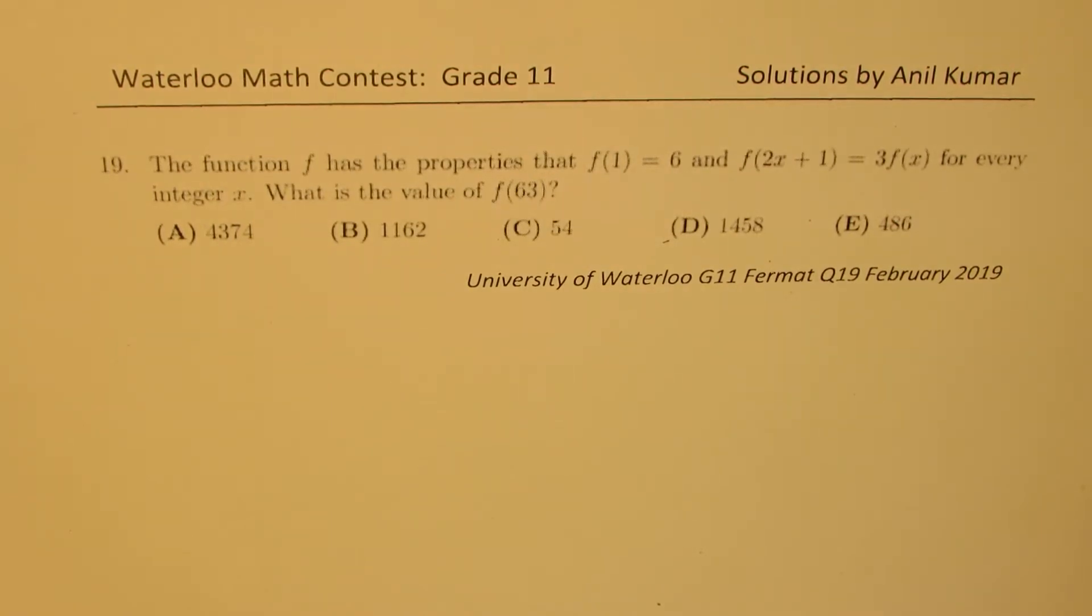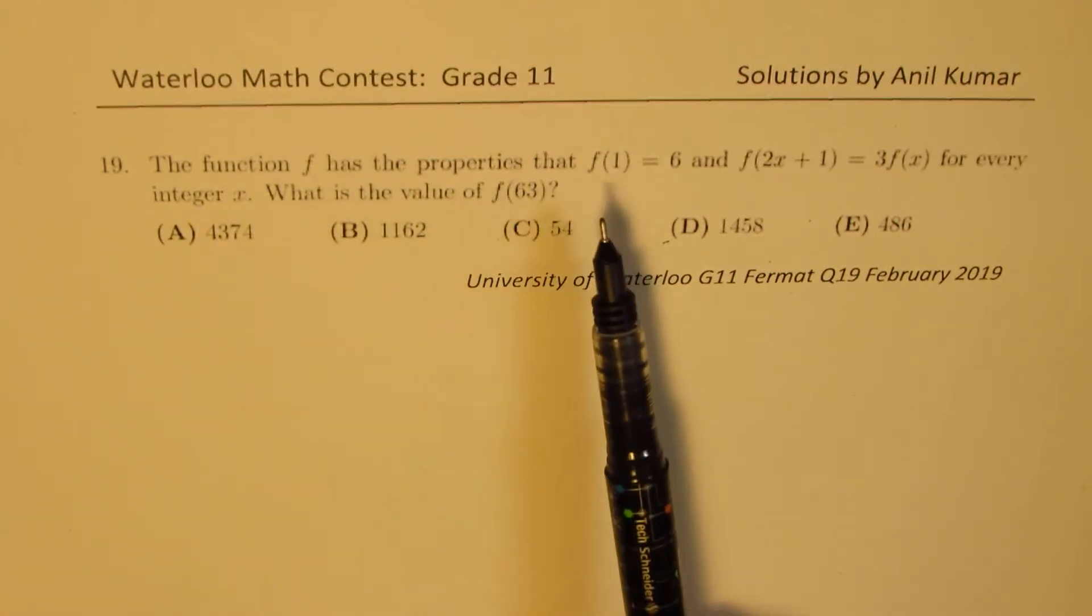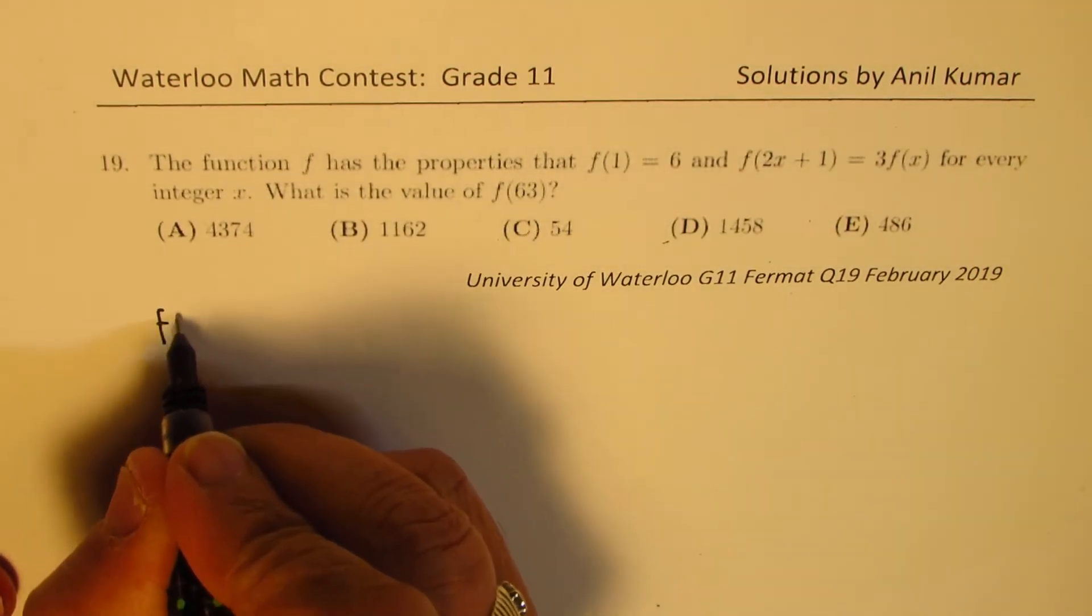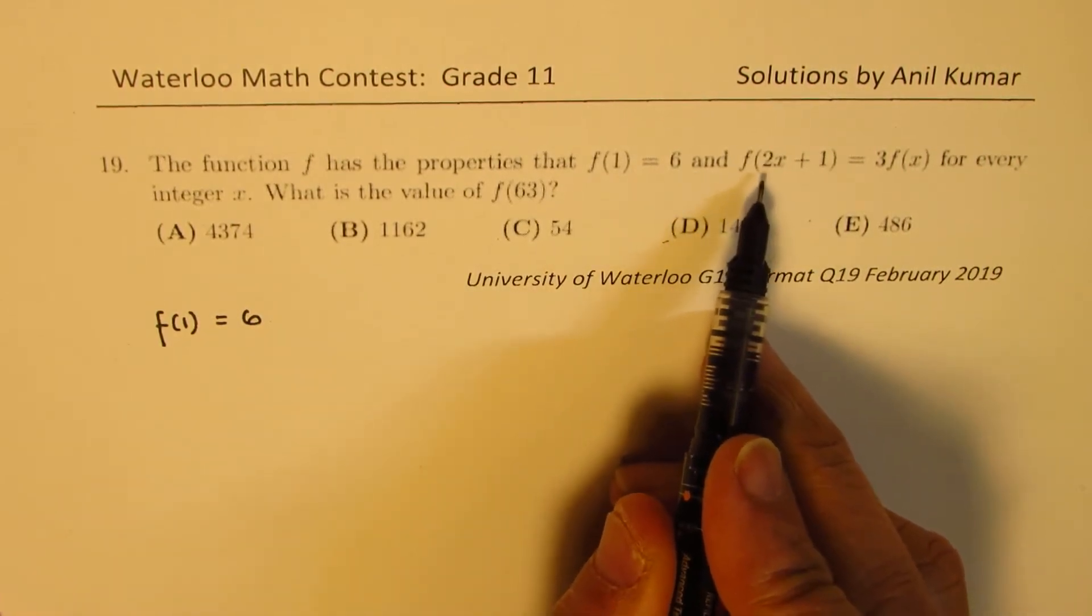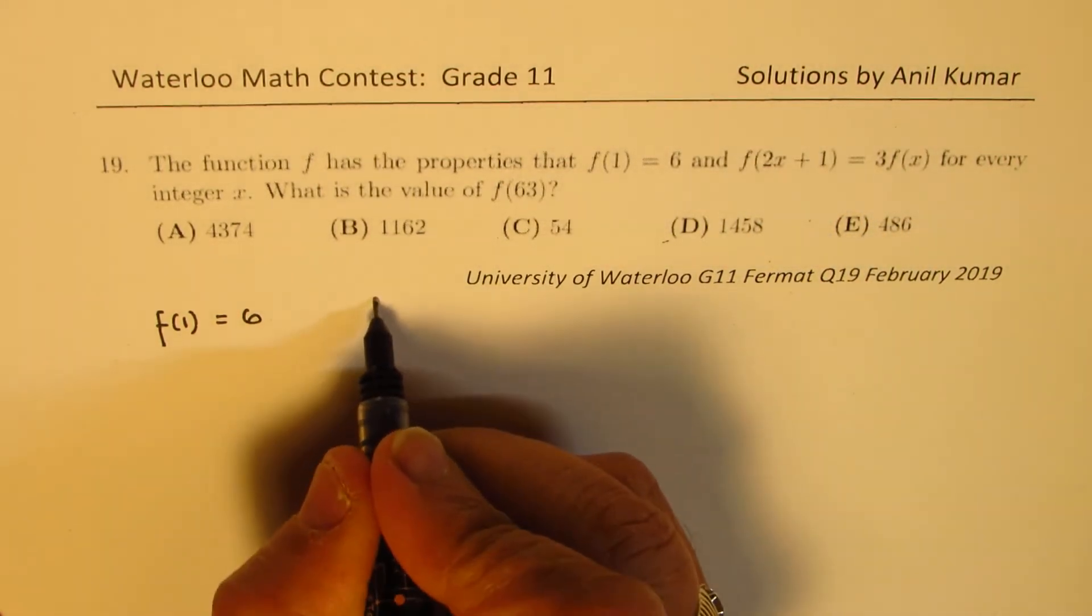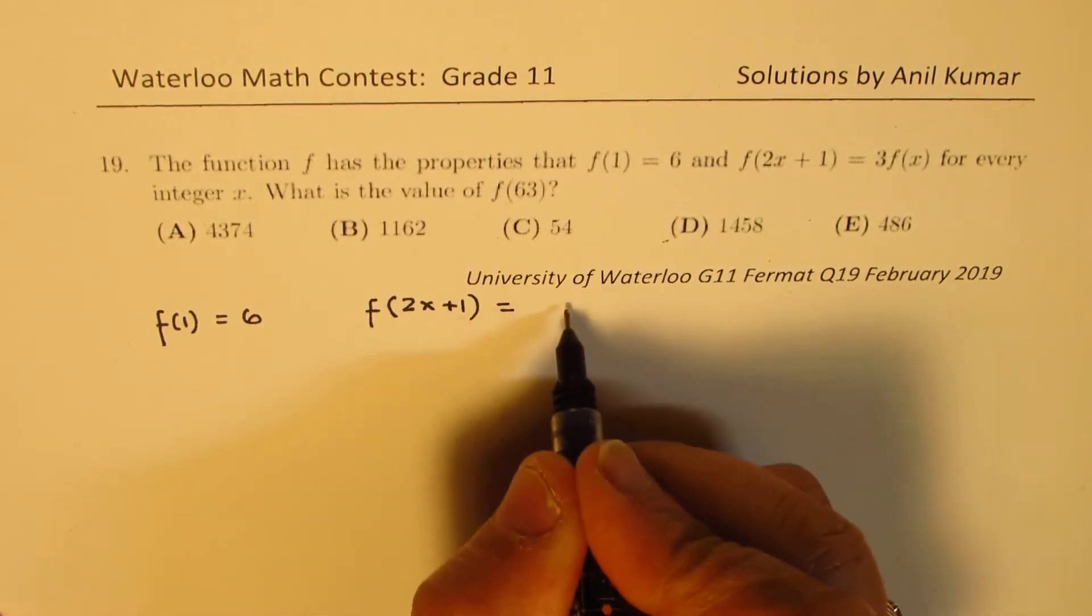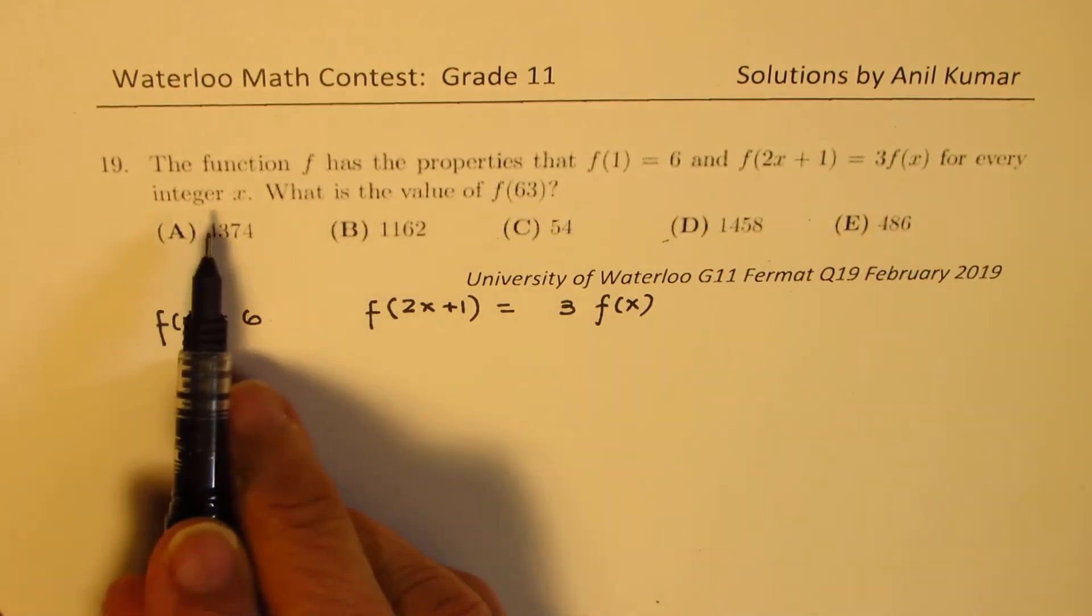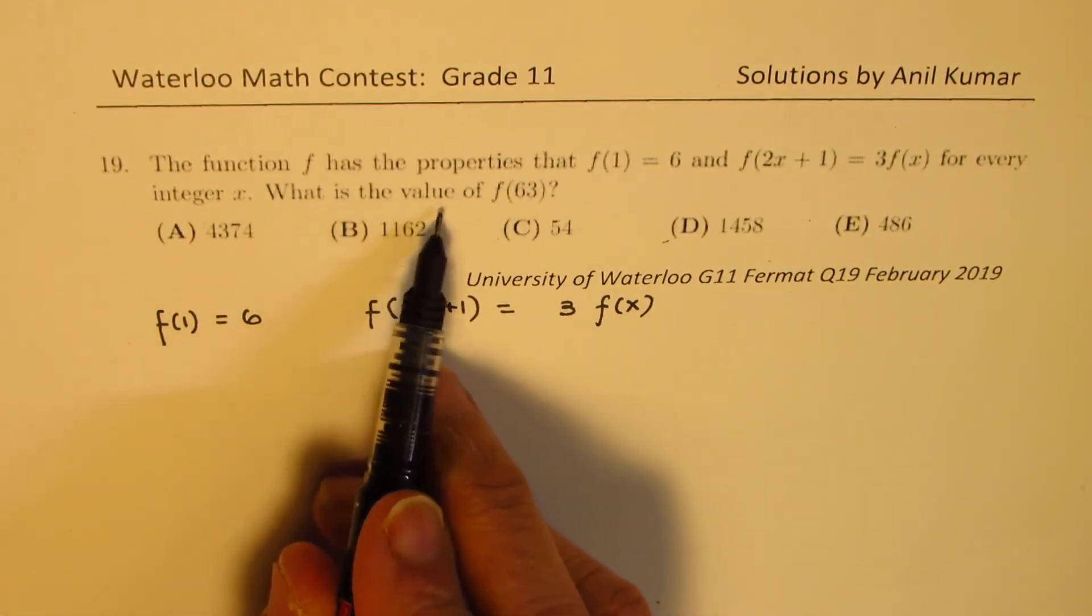The question is based on the concepts of functions. The function f has properties that f(1) = 6. Let me rewrite this. We are given that f(1) = 6 and f(2x+1) = 3f(x) for every integer x. What is the value of f(63)?